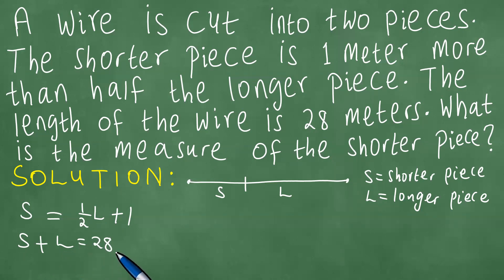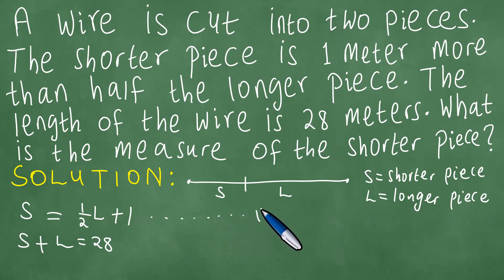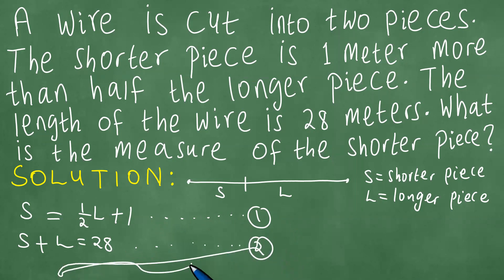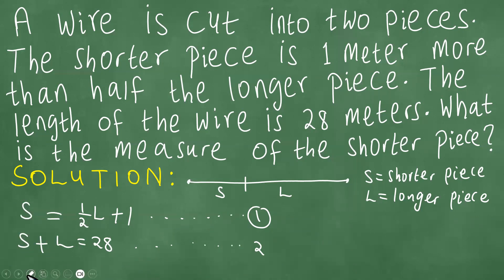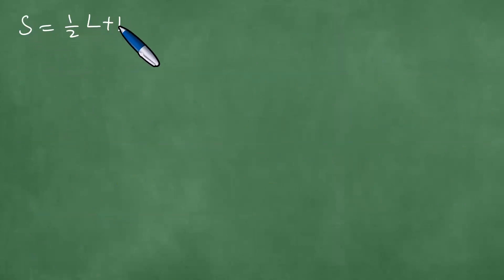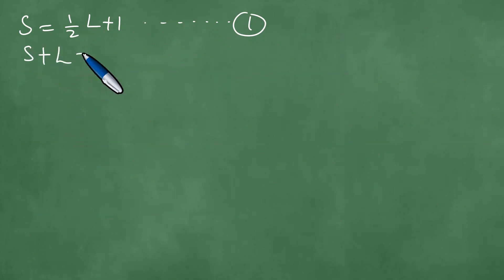What this means is we can set up two equations. We call this equation one: S equals one-half L plus one. And we call this equation two: S plus L equals 28 meters.